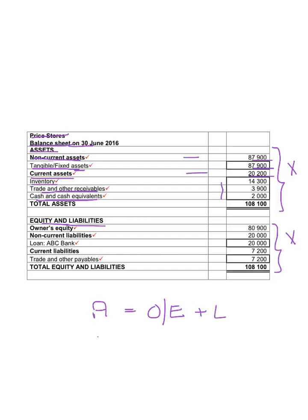Non-current assets plus current assets gives my total assets. On the equity and liabilities side, we show the owner's equity — the amount the owner contributed as capital, plus the profit for the year, less drawings. Non-current liabilities are liabilities paid back more than a year in the future, such as a loan to buy a car, furniture, or equipment, or a mortgage bond where your house is given as security. In this exercise we only have one loan, so total non-current liabilities will be the same.